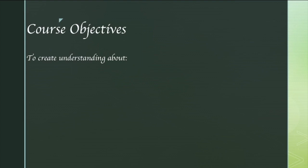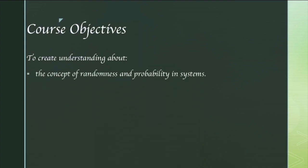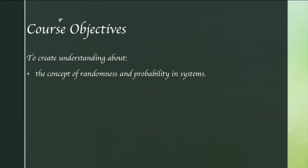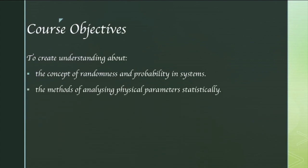This course was planned with three basic objectives. The first is to create understanding about the concept of randomness and probability in systems — it may be an engineering system, a biomedical system, a human system, or management and industrial systems. The second is the method of analyzing physical parameters statistically, such as the effect of medicine on humans.